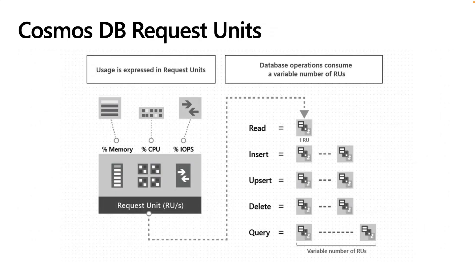Performance of Cosmos DB is governed by request units. Request units are an abstraction of memory, CPU, and I/O. One RU, or request unit, equates to a point read of a one kilobyte item. Inserts, updates, deletes, and queries will result in more RU consumption, and hence higher cost. The cost of RUs for a given operation over a given dataset is deterministic — if you run the same operation over the same dataset with the same configuration, you will get the same request units used for that operation.